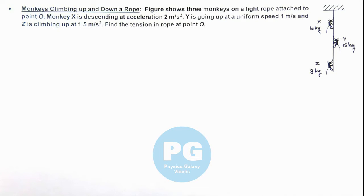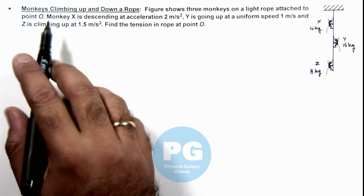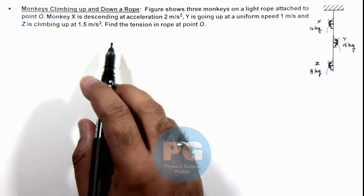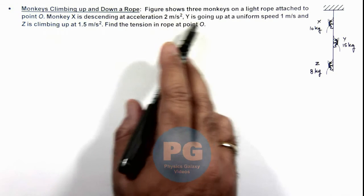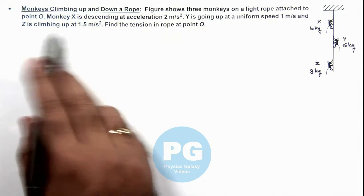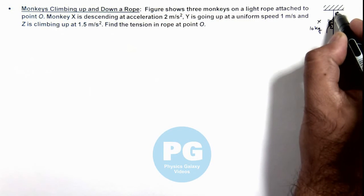In this illustration, we'll discuss monkeys climbing up and down a rope. Here you can see the figure shows 3 monkeys on a light rope attached to a point O, this point O here.